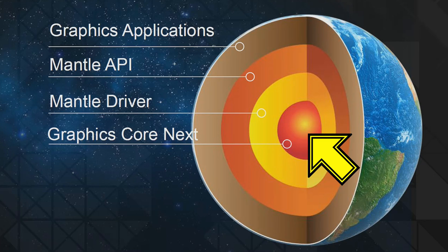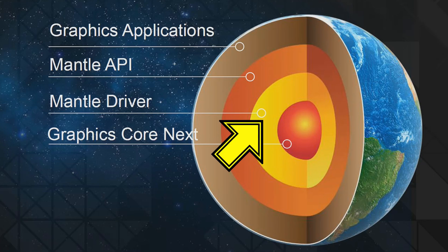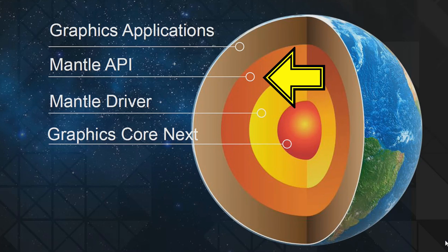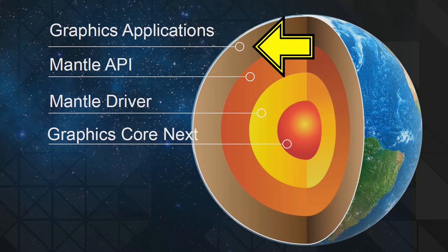If you look at this slide, you can see Graphics Core Next as the core — that's the actual graphics card architecture. If this was Nvidia, you'd be looking at Maxwell or Kepler. Next you see the Mantle driver, which would be the same as a DX11 driver. Here you have the Mantle API, which is basically the code that the graphics applications — in other words, a game — is running on. That would be the same as DX11, DX12, etc. So you've got a game at the top, the API, then the driver, which goes between the API and the actual graphics card itself.